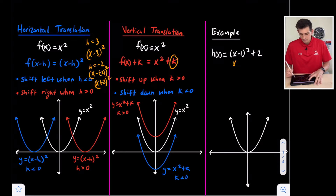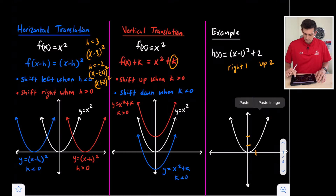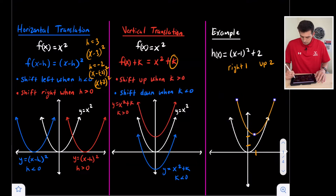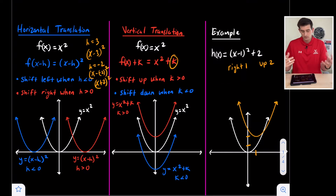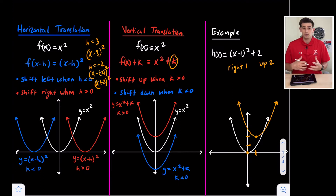For our example, we have x minus one, so we go right one unit, and we go up two. Starting from the parent function parabola in white, we move the vertex right one and up two. Our new graph shows the transformed parabola in orange. For translations, we're not adjusting the size, shape, or orientation of the parabola — we are just shifting or sliding left, right, up, or down.